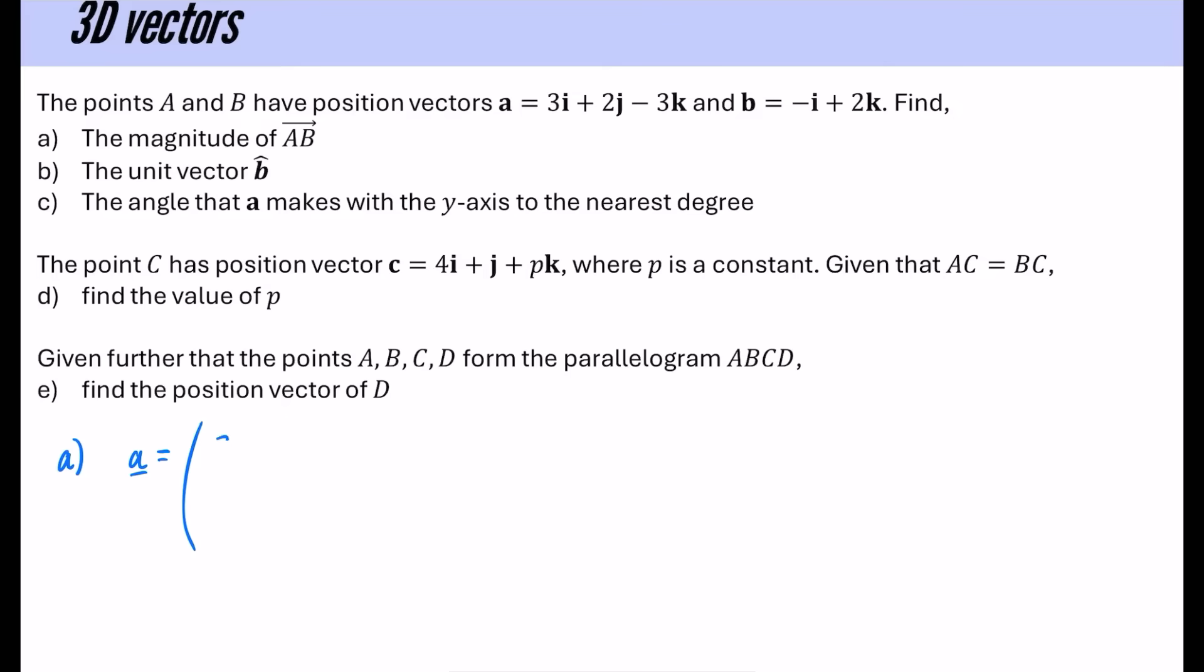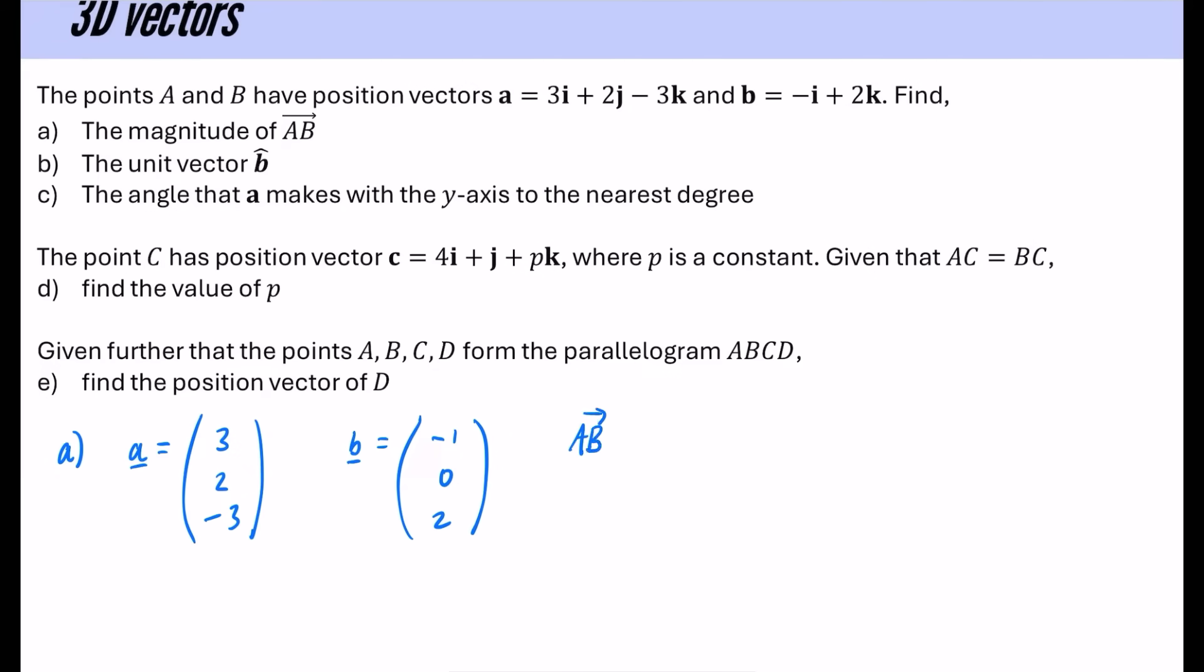And I would highly recommend writing vectors as column vectors. It allows you to spot which are the ones that are kind of matching with each other, like the i, the j, and the k. So we have an i, a j, and a k. There's no j for B. It just makes it a lot easier to see everything, whereas when they're written in a list, it can often be hard to spot the ones that are the i's, the j's, and the k's, especially because i and j look so similar. And they do accept this in all mark schemes as well. So I'm going to find the magnitude of AB. Now, hopefully from year one, you remember that to do the vector AB, you do the second letter minus the first letter.